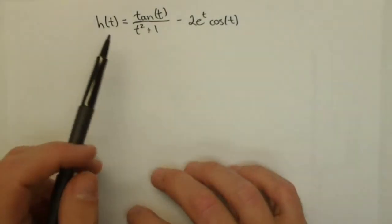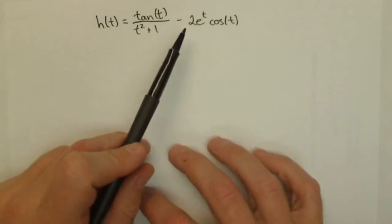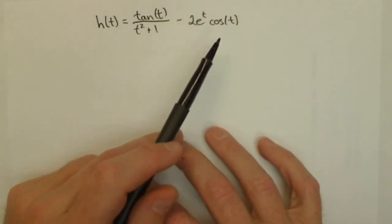In this video, we're going to find a derivative of the function h(t) equals tangent of t over t squared plus 1 minus 2e to the t cosine of t.